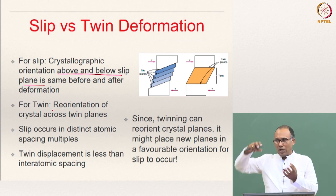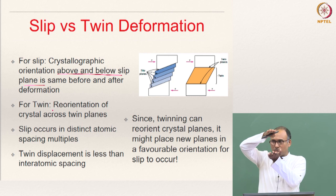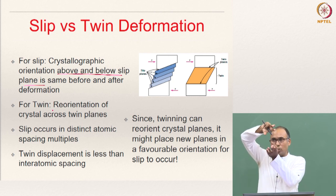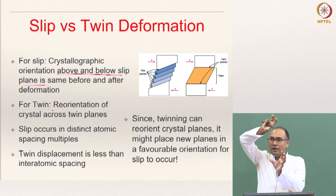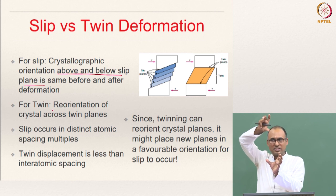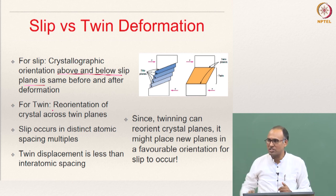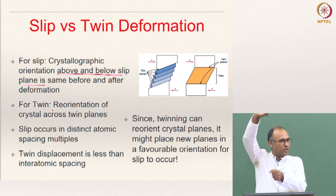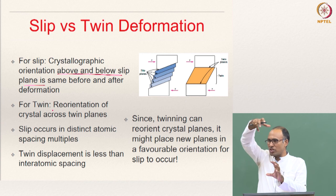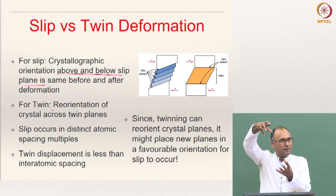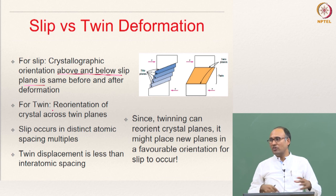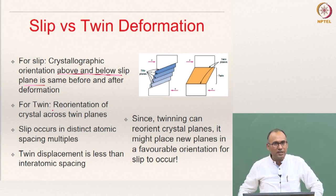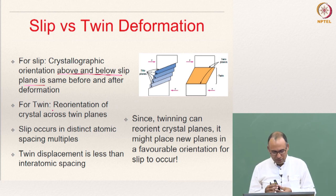This reorientation means that across the twin boundary the crystal orientation changes. This might actually trigger slip because the reoriented systems may become active slip systems due to the change in orientation. The loading is the same, but because of this rotation, the Schmid factor on those slip systems might be higher, initiating deformation through slip. So twinning can also assist in enhancing slip, which is observed in several systems.